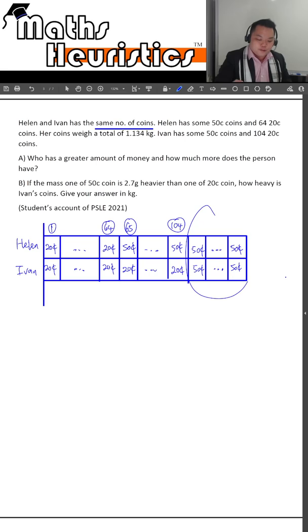This is the number of 50 cent coins. And this is where students start to panic. Okay, let's solve part A first.